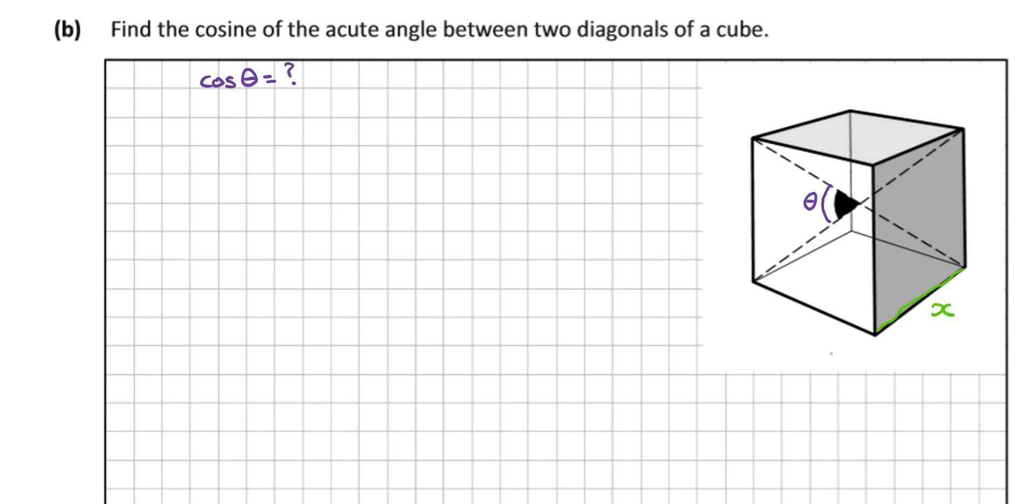What we want to find is this length here and this length here. We know this length is x here. These two red lines, they're the same length because diagonals of a cube bisect each other. So if I could find this red line, I would automatically know this red line, and I'd be able to use the cosine rule. The red line here is equal to half this purple line. So looking at the purple line, how do I find the purple line?